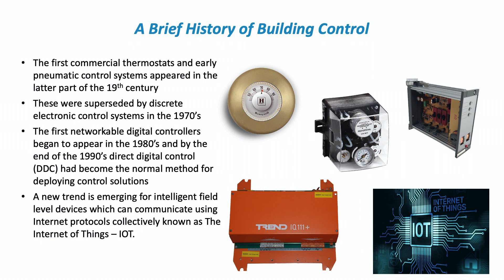Later on in the 19th century we started to get pneumatic control systems — analog control — and that remained the mainstay of control systems right up until the 1970s. In the 1970s we started to see discrete electronic control systems because electronics were becoming cheaper, and by the 1980s this was the norm. There were a huge amount of Stafer controllers out there — if you look at that picture on the far right, that's a Stafer controller, I think that's an RDK99.